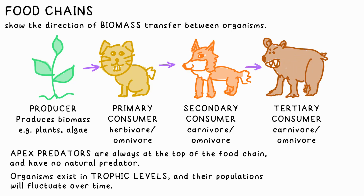Population numbers of all of these will fluctuate in an ecosystem over time. By the way, this food chain is possible — I looked it up — bears have been known to eat foxes.